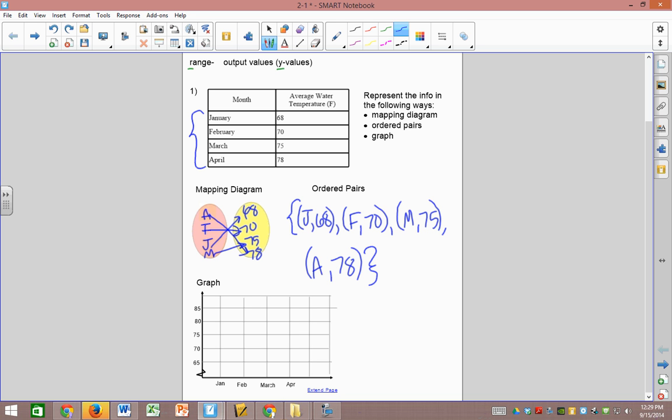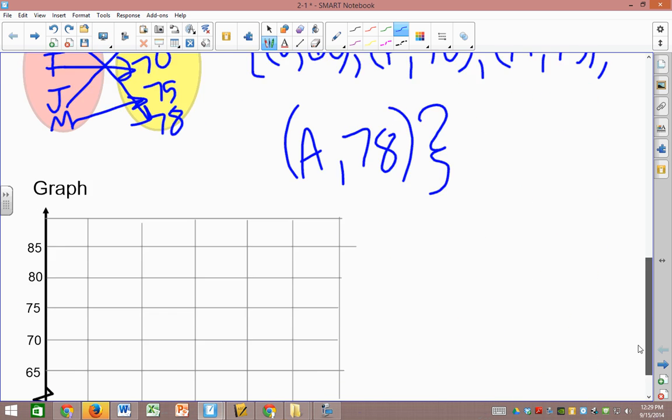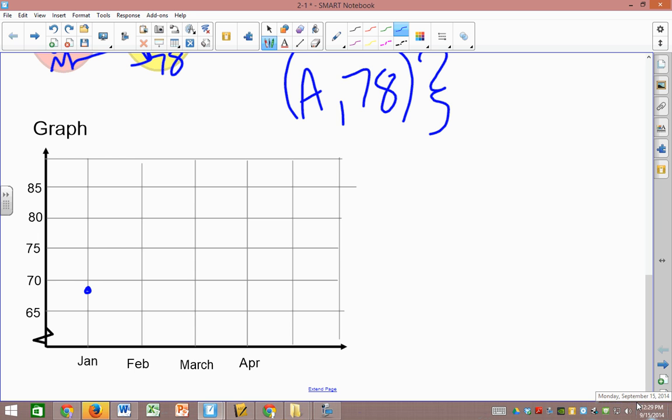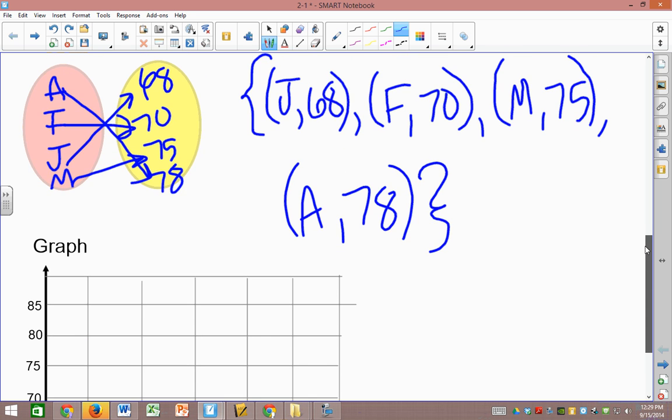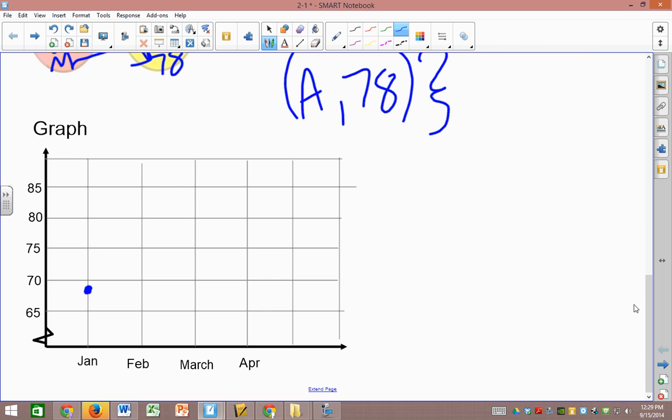Then graphing. We're just doing a regular old graph. So January 68 is about there. February 70, 75 for March, 78. Do I want to connect the dots here? I don't think so. Because we don't know. That's the average for the whole month. So just for a relation, you're just going to put almost like a scatterplot. So do not connect the dots.